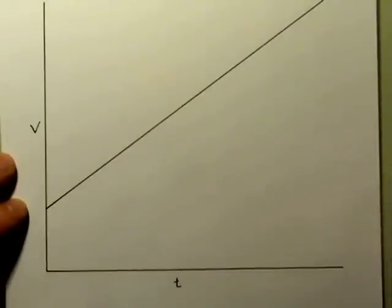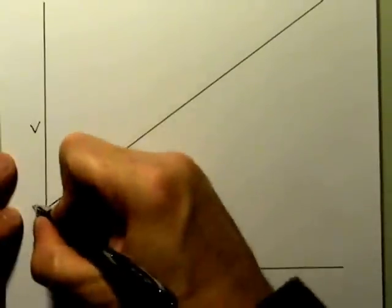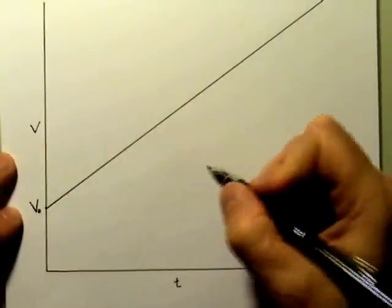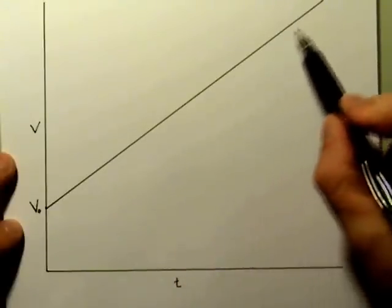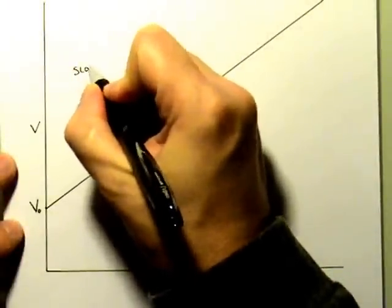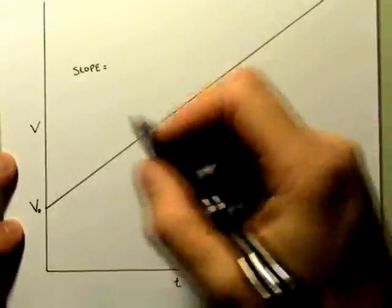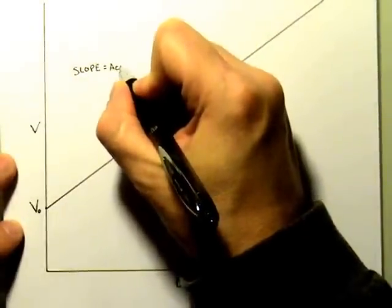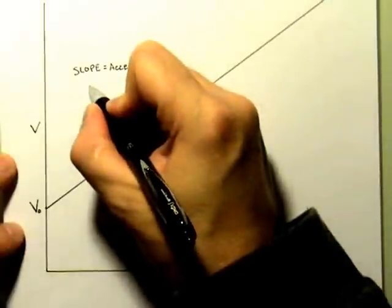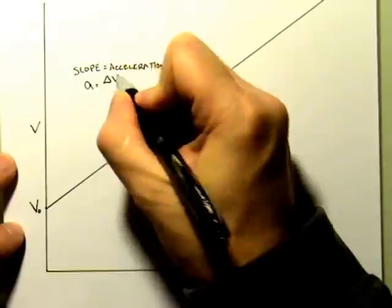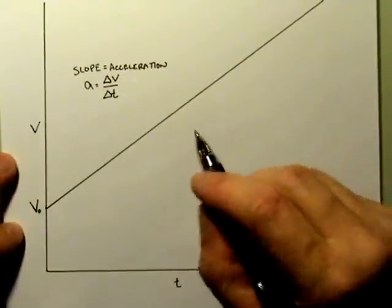Can we see anything on the graph that's immediately obvious? One thing that's pretty clear is that the point on the y-axis is my initial velocity, V-naught. Also, if I look at the slope of this line, rather than being velocity as it was on the displacement-time graph, in this case the slope is the acceleration.